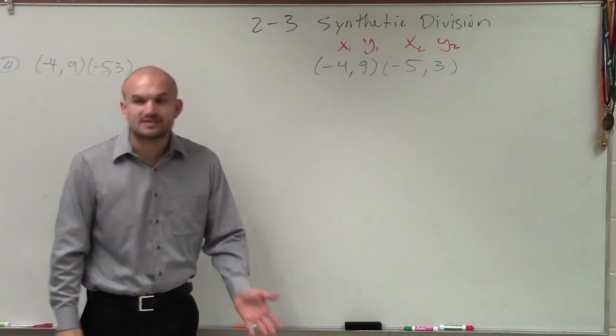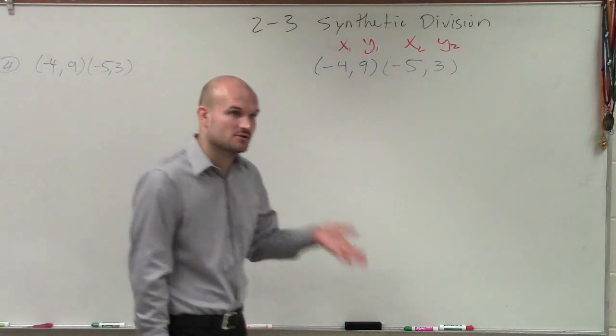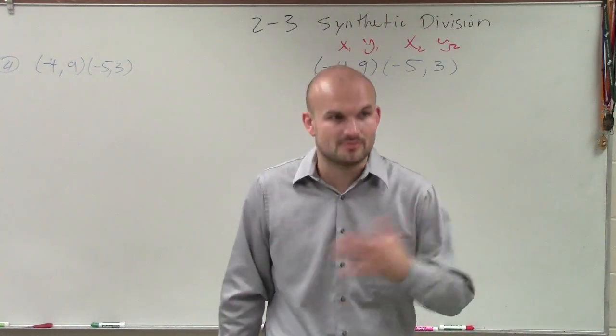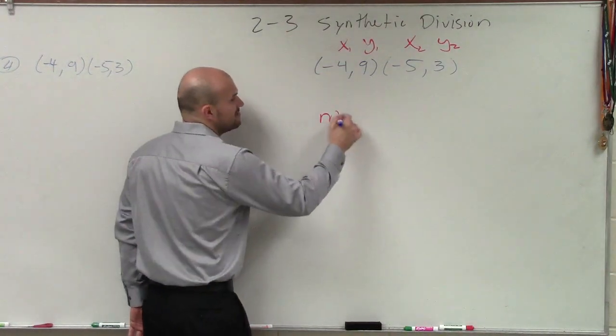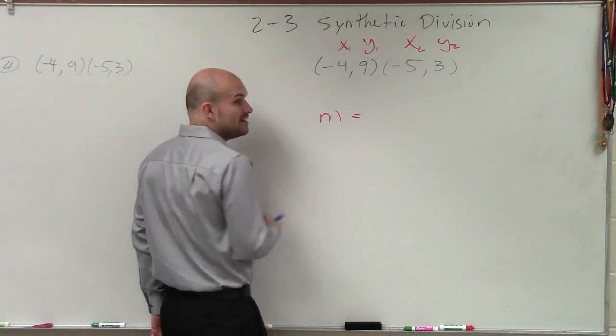All right, but now our distance formula, remember distance equals the square root of x2 minus x1 squared plus y2 minus y1 squared, now your midpoint, if I want to find the midpoint of two points, your midpoint is a point.